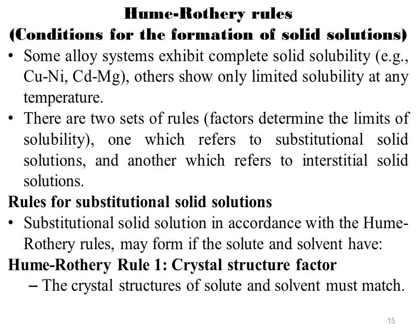What are the Hume-Rothery rules or conditions for the formation of solid solution? The Hume-Rothery rules are a set of basic rules describing the conditions under which an element could dissolve in a metal, forming a solid solution. Some alloy systems exhibit complete solid solubility — for example copper-nickel or cadmium-magnesium — while others show only limited solubility at any temperature. There are two sets of rules or factors determining the limits of solubility: one which refers to substitutional solid solution and another which refers to interstitial solid solution.